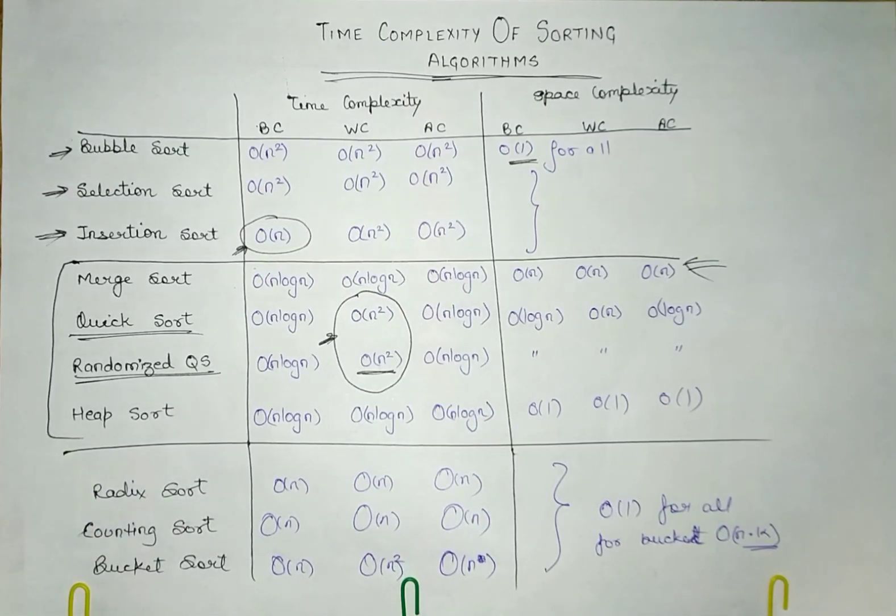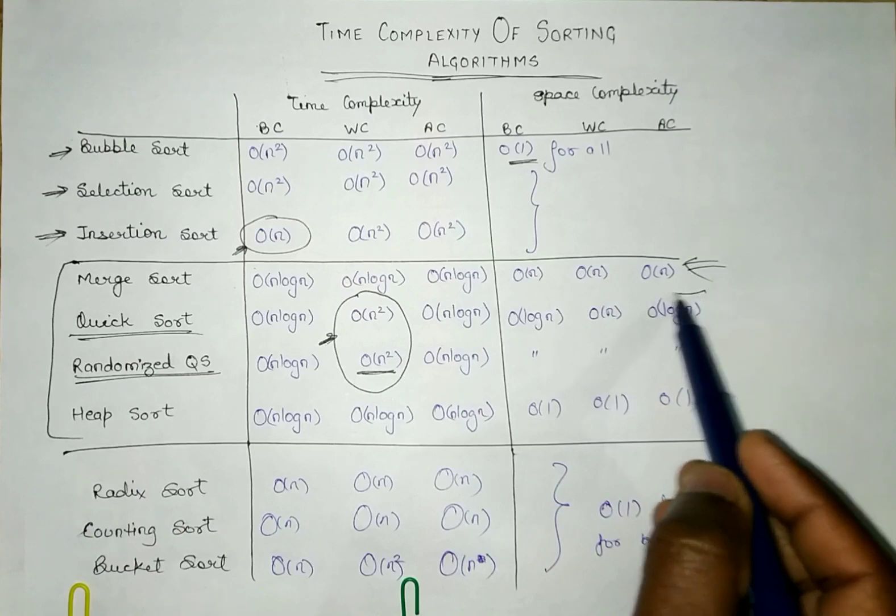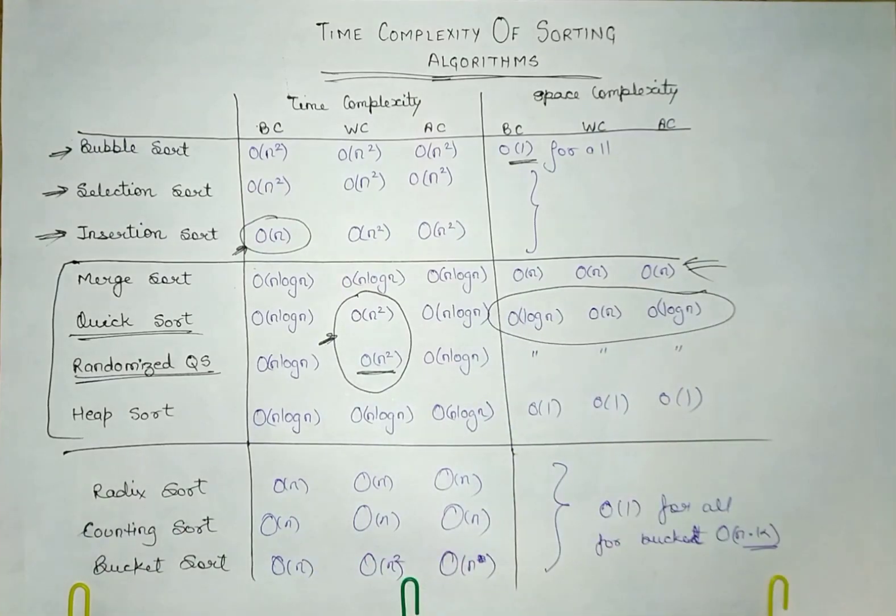In quick sort, sometimes we need the space for all of the things, sometimes we need space for log n times. This space complexity depends on the condition. You can refer to the particular video of quick sort to understand this in detail. And heap sort we do not require extra space, because of which the space complexity is order of 1.